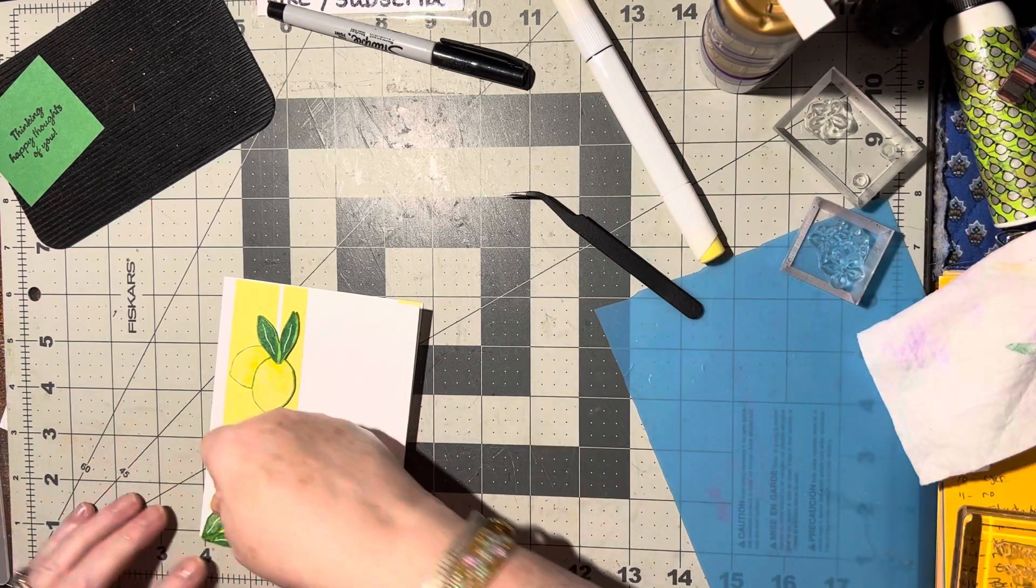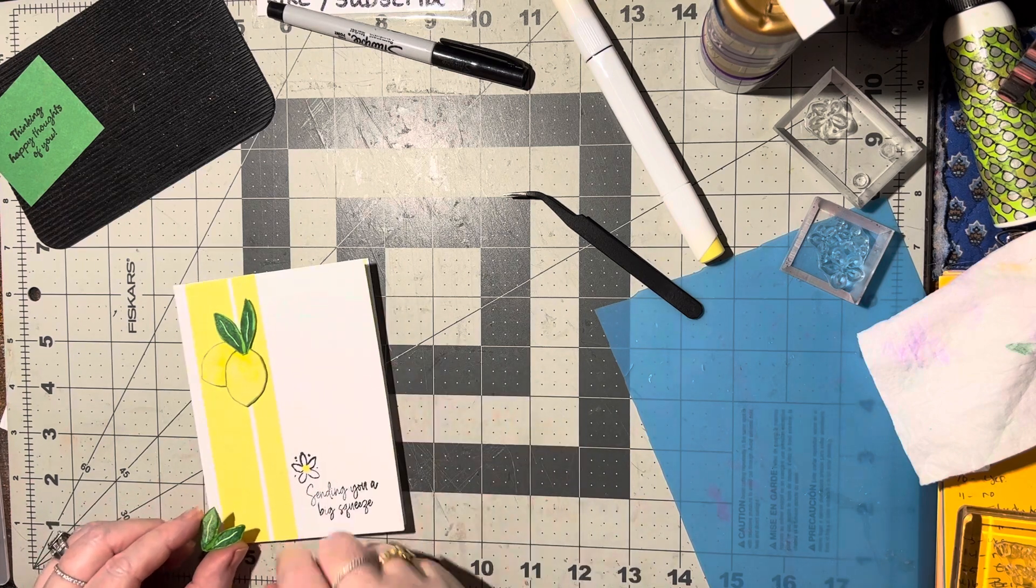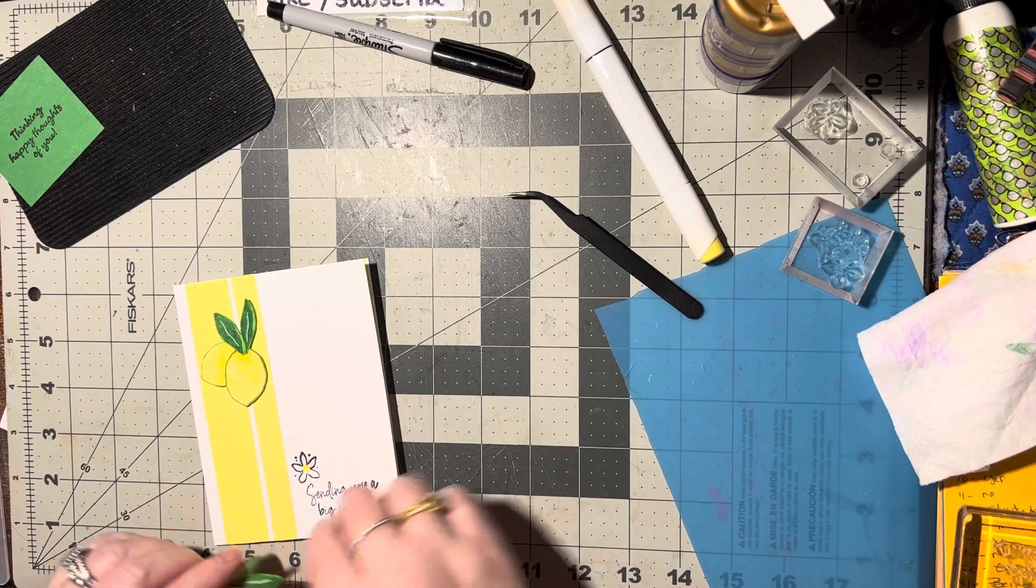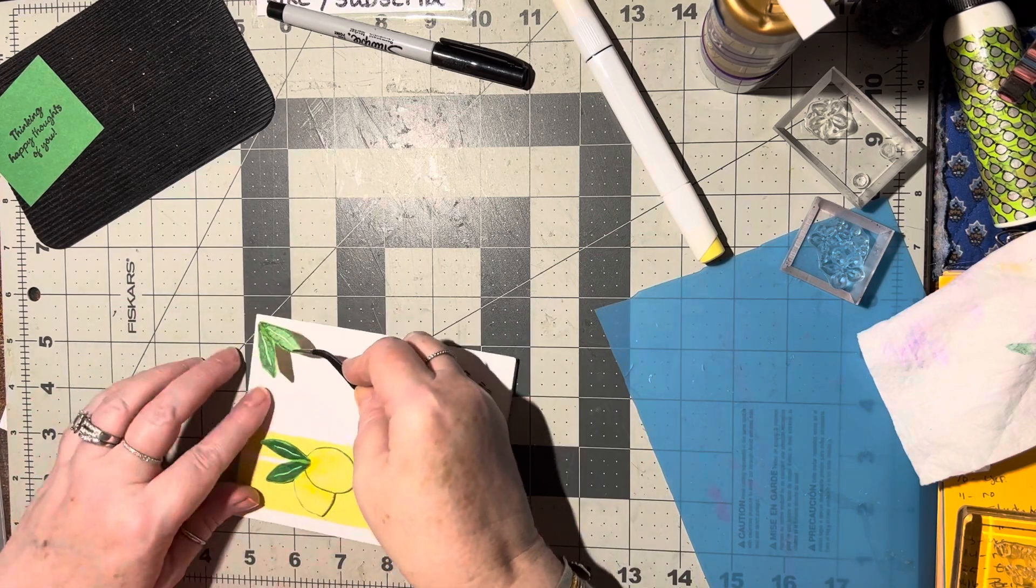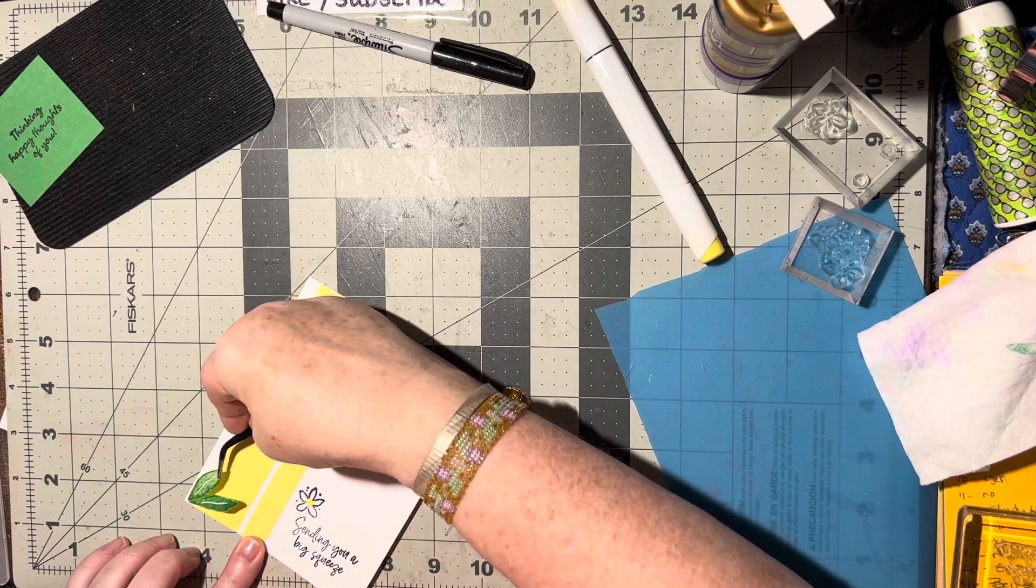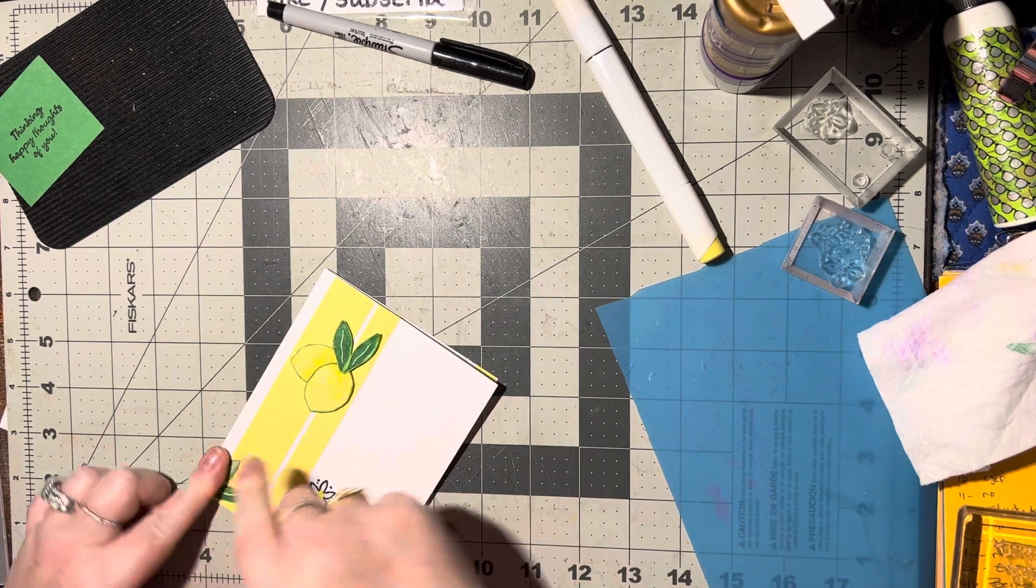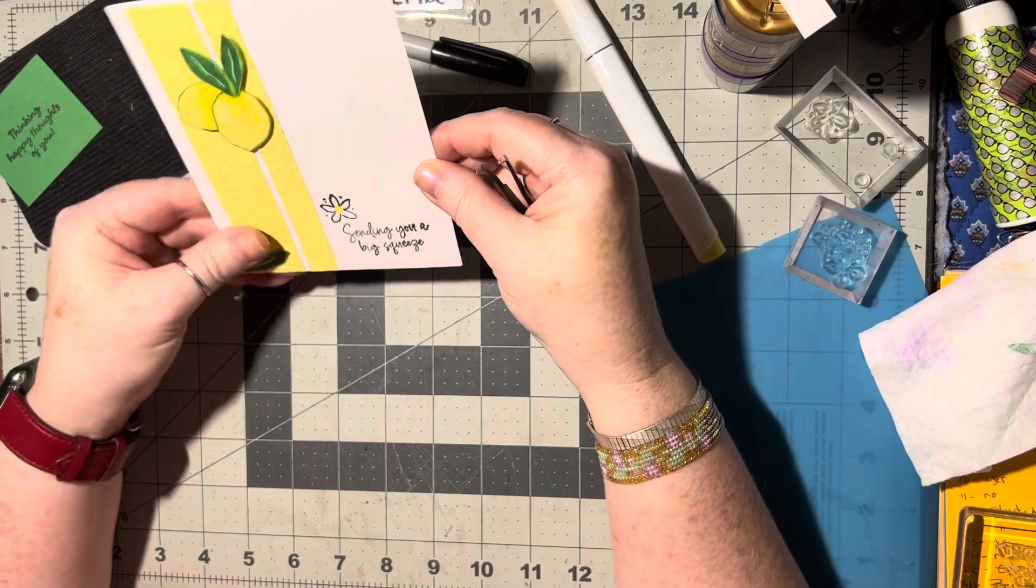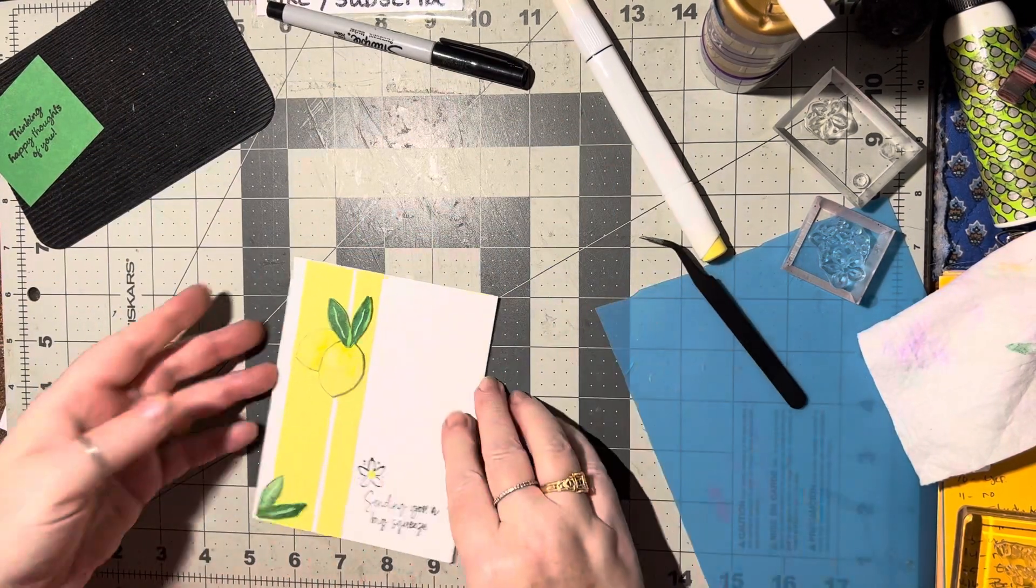Do I like them better there or here? Hmm. I think I like them up here. That does, nope, you know what, I think I like them down here because that helps make a triangle for me and I like that.